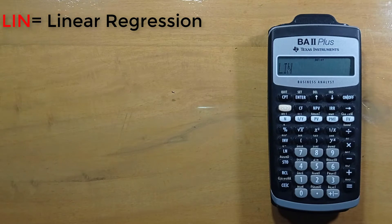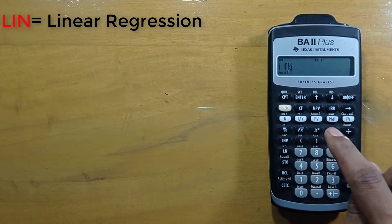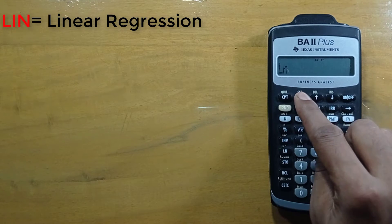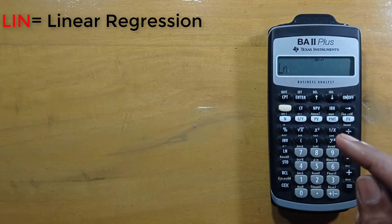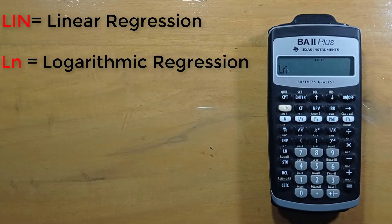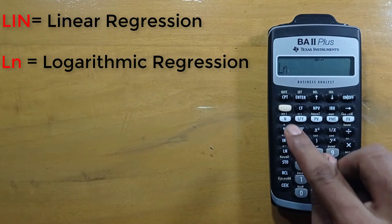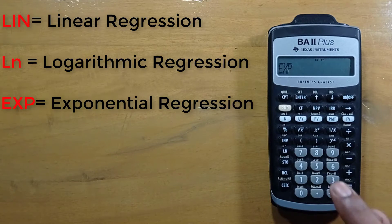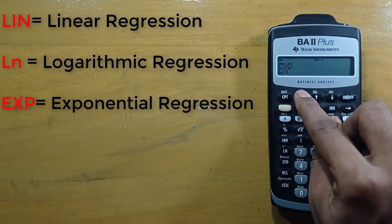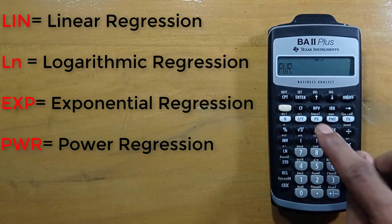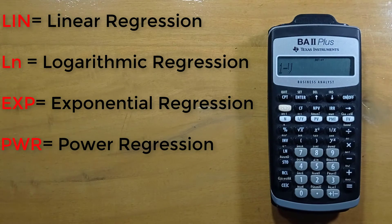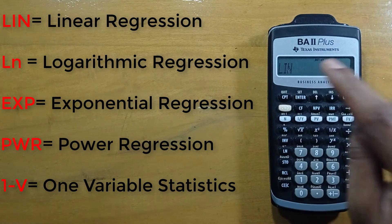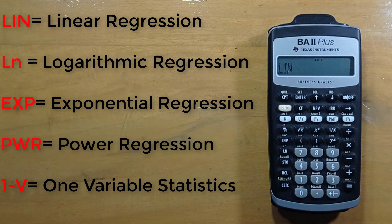If you don't have lin on the screen, then press second and enter until you get lin. This ln is for logarithmic regression, this is for exponential, press second and enter to change, this is for power regression, this is for one variable statistics. Now we have our lin or linear regression model.